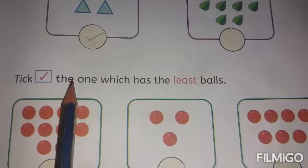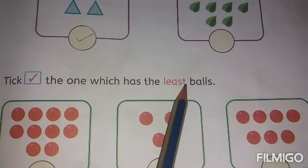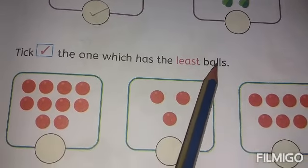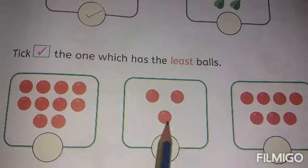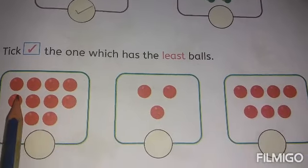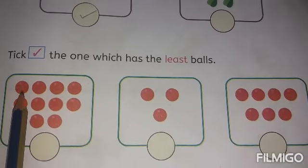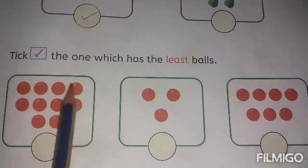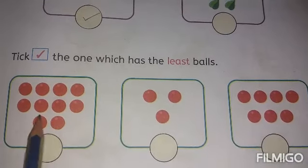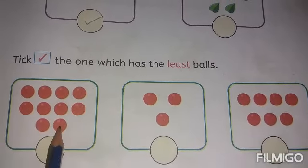See the next one. Pick the one which has the least balls. Let us count the balls. First box: 1, 2, 3, 4, 5, 6, 7, 8, 9, 10. How many balls? 10 balls.